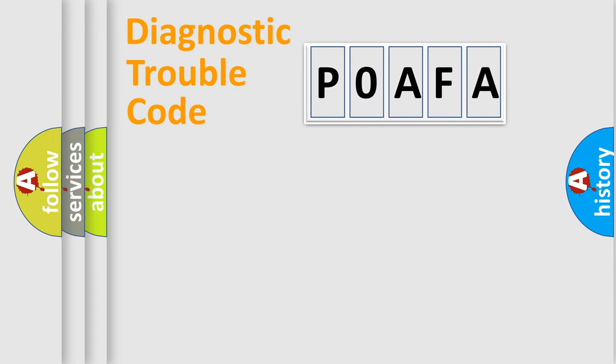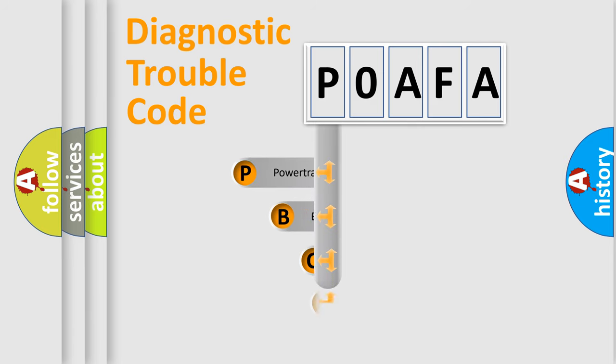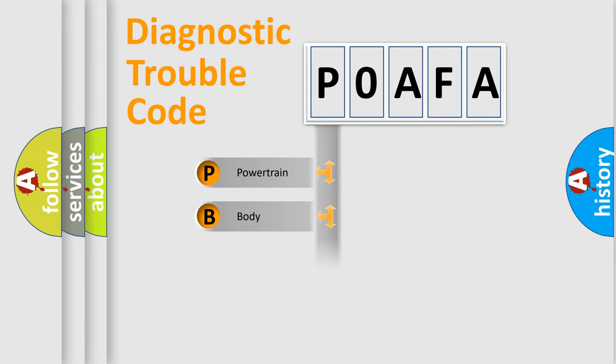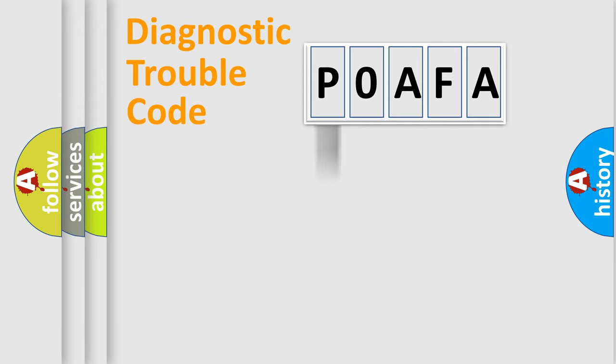Let's look at the history of diagnostic fault code composition according to the OBD2 protocol, which is unified for all automakers since 2000. We divide the electric system of an automobile into four basic units: Powertrain, Body, Chassis, and Network.